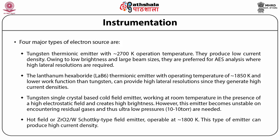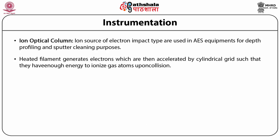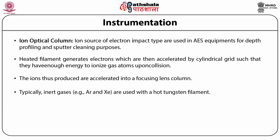The ions produced are accelerated into a focusing lens column. Typically, inert gases such as argon and xenon are used with the hot tungsten filament.